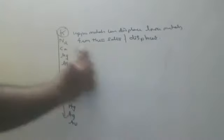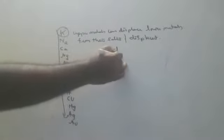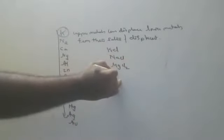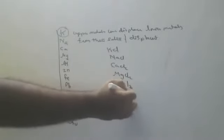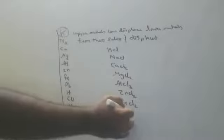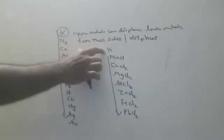Let me take chlorides of all elements: KCl is potassium chloride, NaCl is sodium chloride, MgCl2 is magnesium chloride, calcium chloride CaCl2, aluminium chloride AlCl3, zinc chloride ZnCl2, FeCl2 iron chloride, PbCl2 lead chloride. Potassium can displace all these metals because potassium is more reactive. K + NaCl gives KCl + Na; K + CaCl2 gives KCl + Ca. Upper metals can displace lower metals.